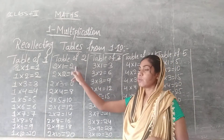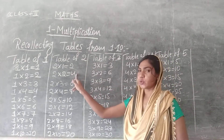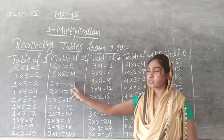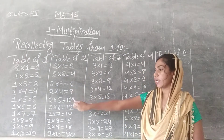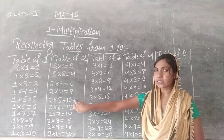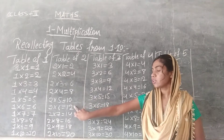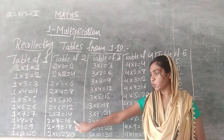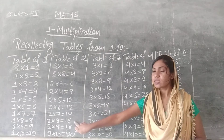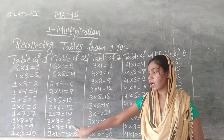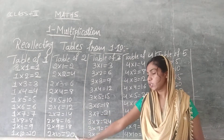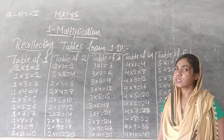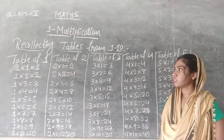2 1s are 2, 2 2s are 4, 2 3s are 6, 2 4s are 8, 2 5s are 10, 2 6s are 12, 2 7s are 14, 2 8s are 16, 2 9s are 18, 2 10s are 20. And now come to the table of 3.